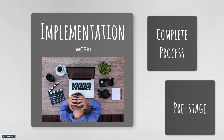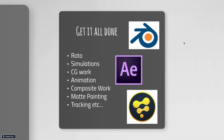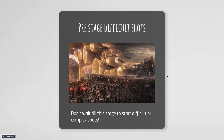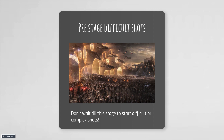At some point you get to the implementation phase — where everything actually gets done. Rotos, simulations, CG work, animation, compositing, matte painting, tracking, etc. It doesn't really matter what program you're using. I teach DaVinci Resolve's Fusion page because it's free, but there's nothing wrong with After Effects, Blender, or Nuke. It's a good idea to pre-stage difficult shots. Like in Avengers Endgame, there were so many shots — you can block things out and start getting shots without all the hero assets. Get in the atmosphere, base backgrounds, plug things in so you know where they go, and then when your CG models, green screen plates, and background footage are ready, you can composite everything together.